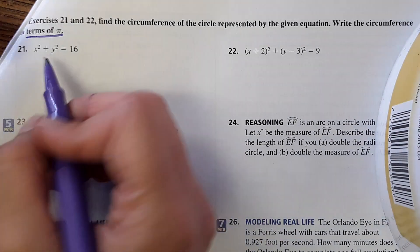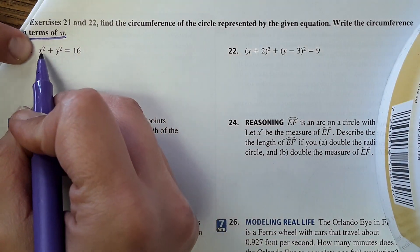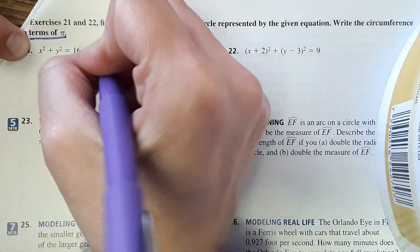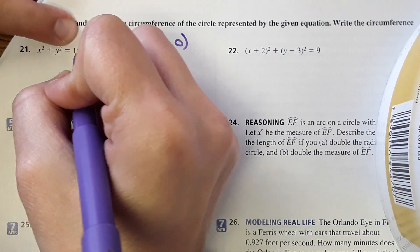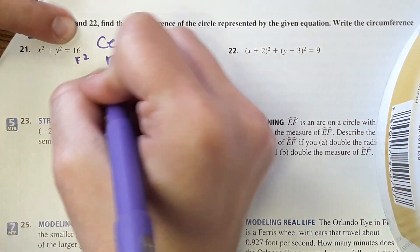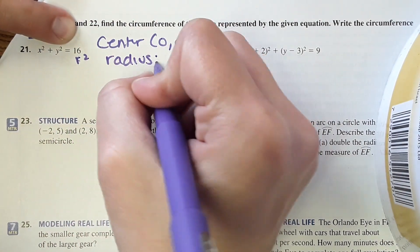So just kind of reviewing, yesterday this is the equation of a circle. If it doesn't have x plus any number or y plus any number, then the center is at 0, 0. And this right here is the radius squared. So in this case, the radius is going to be 4.